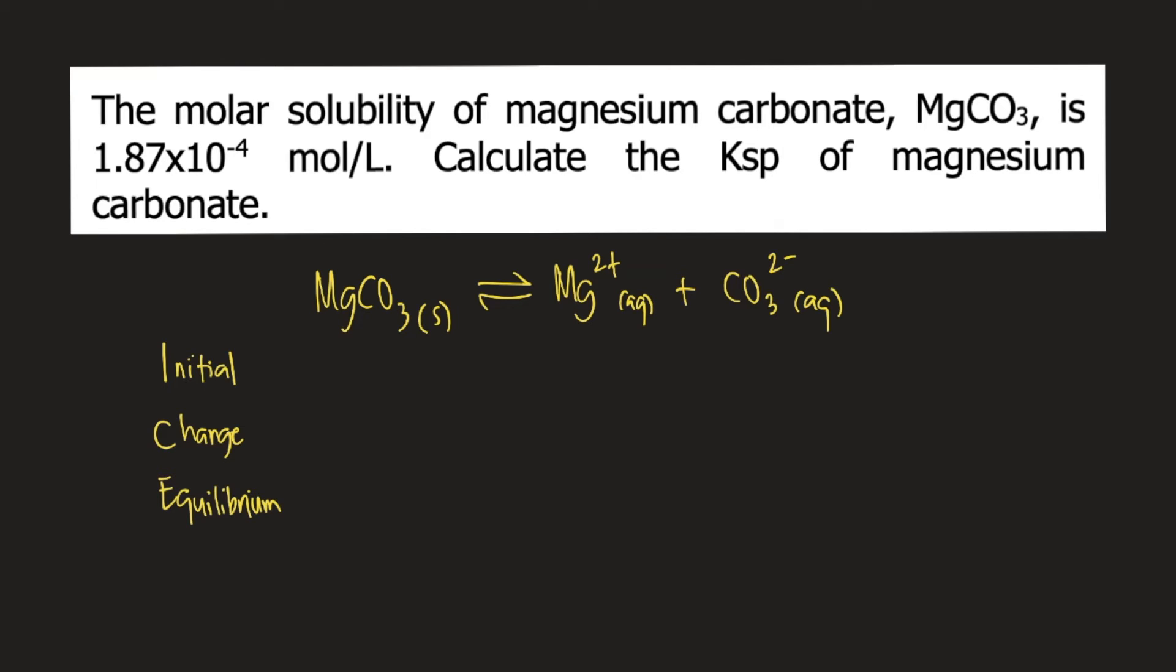In this case, we do not consider MgCO3 because it is a solid. Let's focus on the right side, on the aqueous species. Initially, you have nothing. So 0 Mg2+ and 0 of carbonate anion.